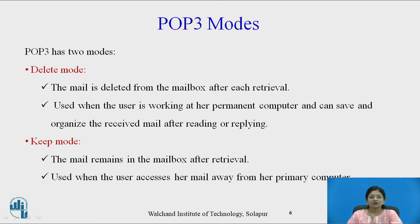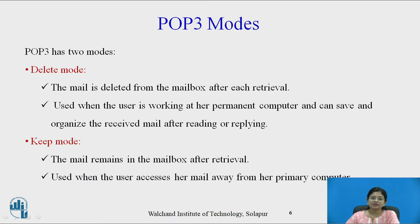There are two types of POP3 modes. The first is delete mode, where mail is deleted from the mailbox after each retrieval. This mode is used when the user is working at their permanent computer and can save and organize received mail after reading or replying. In keep mode, the mail remains in the mailbox after retrieval. Keep mode is used when the user accesses their mail away from their primary computer.